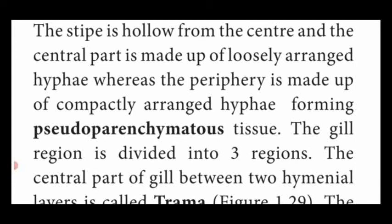The stipe is hollow from the center. The central part is made up of loosely arranged hyphae, whereas the periphery is made up of compactly arranged hyphae. The stipe of Agaricus is known as stipe, which is thick, fleshy, and cylindrical in shape. When taking a cross section of a stipe, we can see the central region and the peripheral region — the central region consists of loosely arranged hyphae, whereas the peripheral region of the stipe consists of compactly arranged hyphae.